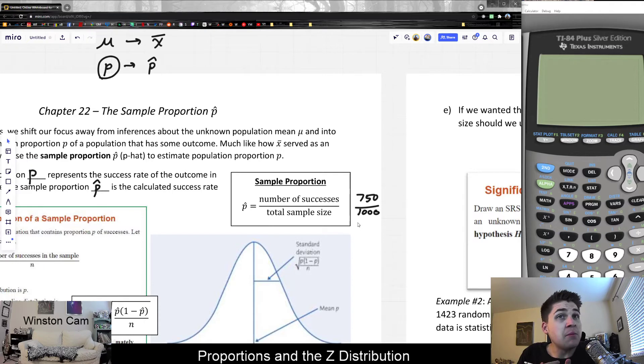Usually you're going to be given these particular numbers. What's the number of successes, which is sometimes called X. And then what's the sample size? That's what we always call N. N is just how many people we are getting the data from.